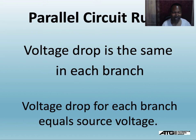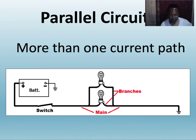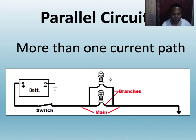The voltage drop is the same across each branch — voltage drop at each branch equals source voltage. With a 12-volt battery, each branch should drop 12 volts. My voltmeter is hooked up in parallel with the circuit — one lead here and one lead here, across the circuit — to measure voltage drop. The voltage drop on each leg individually should be 12 volts.